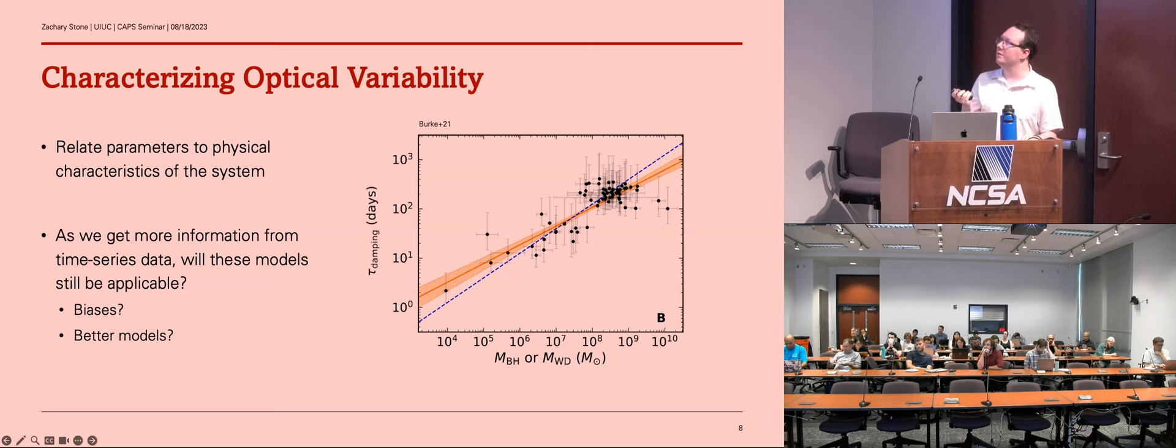Here's just an example fit of one of the objects in our sample with these 20-year long light curves. This is a Gaussian process and we extract some parameters and we can reconstruct the power spectrum there. And the real reason we want to extract these timescales, one is to see if they're accurate, if we can accurately describe these time series data with the models we're using. And two, we want to try and relate these timescales to physics within the system.